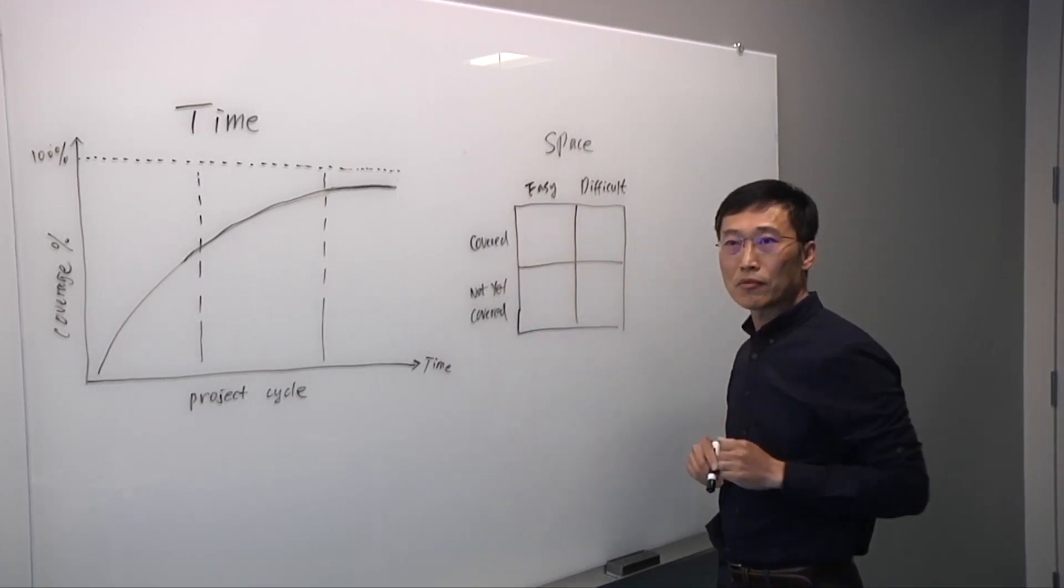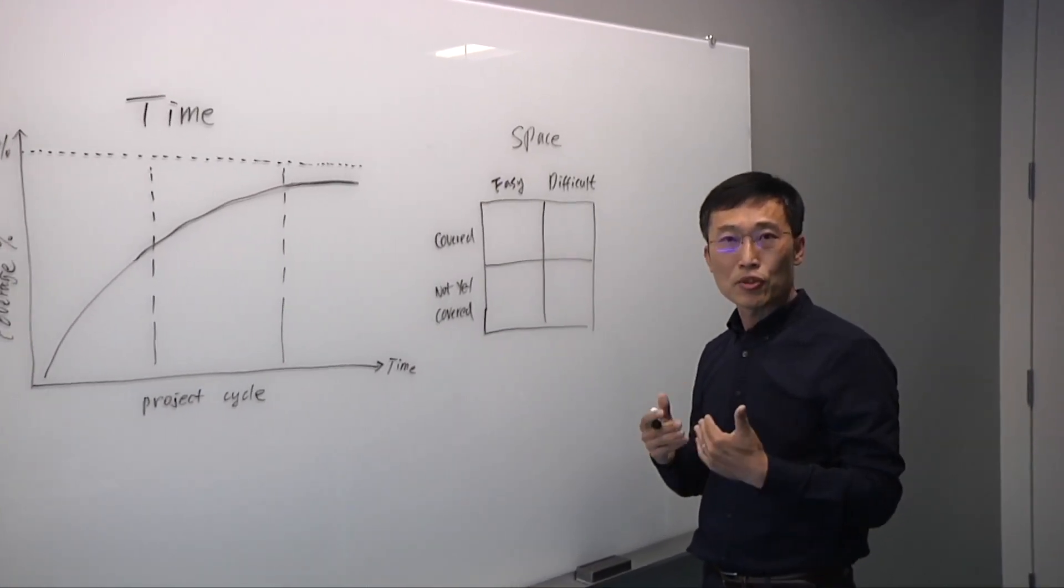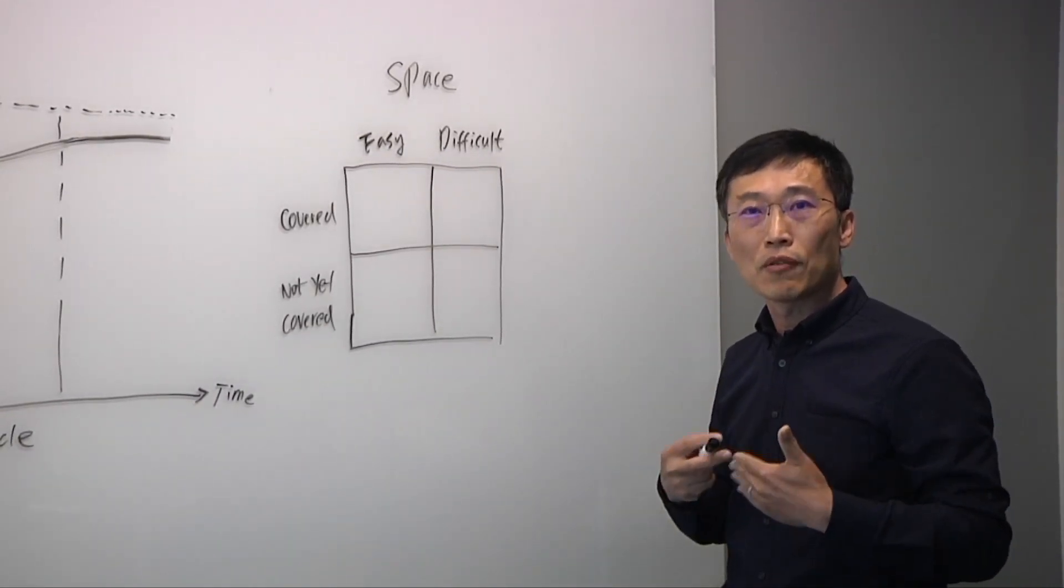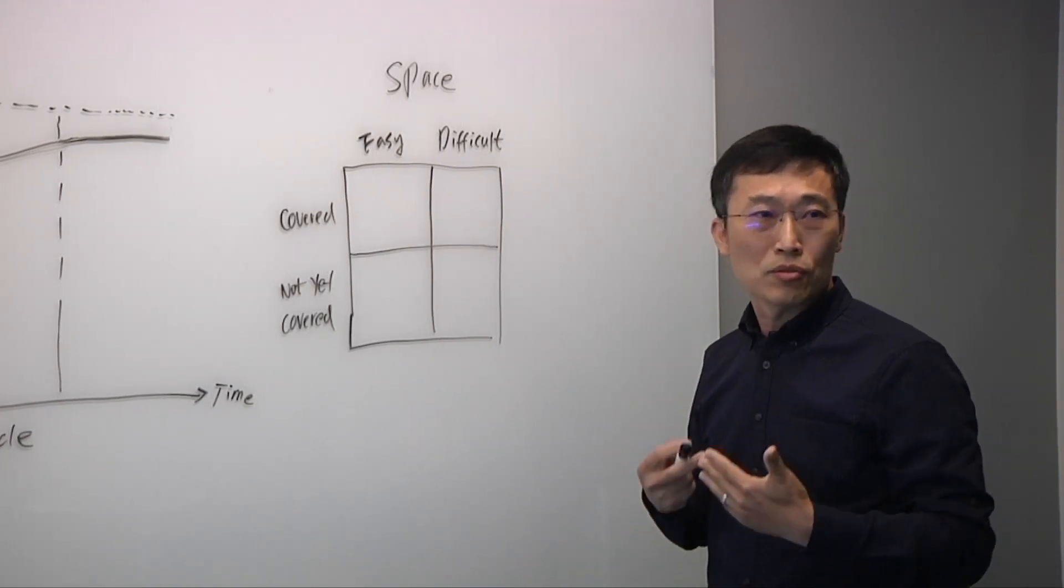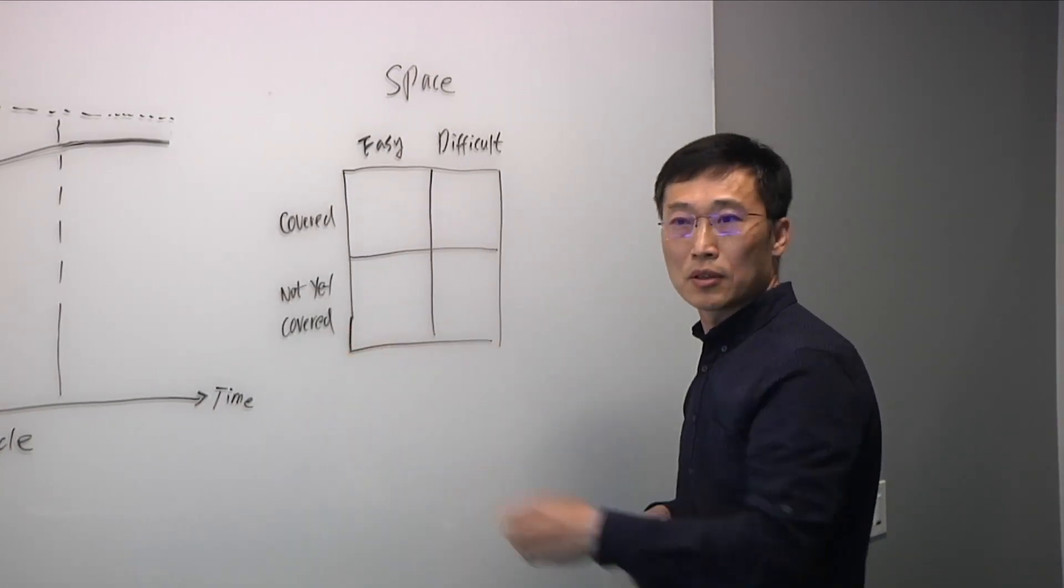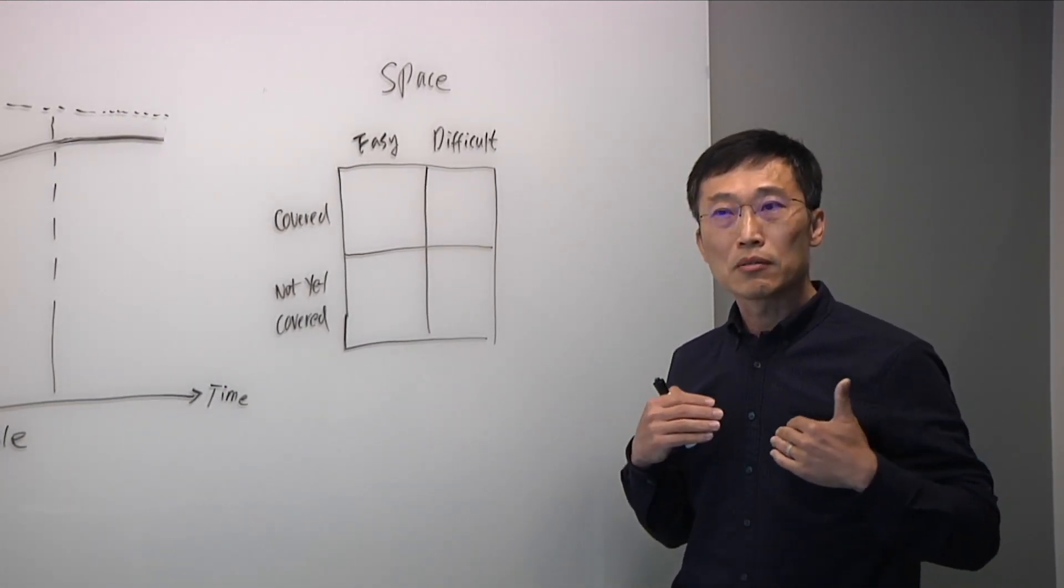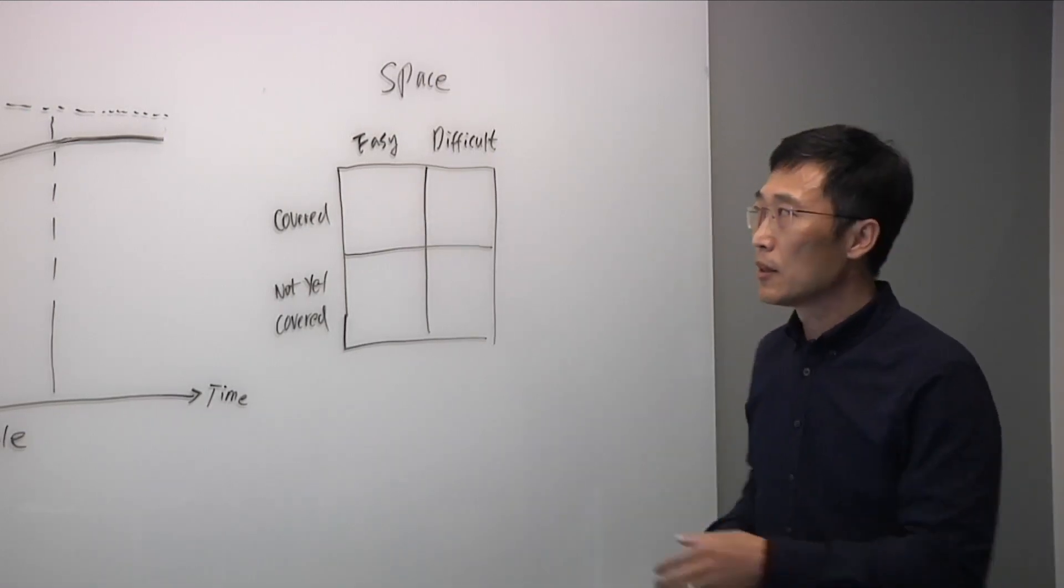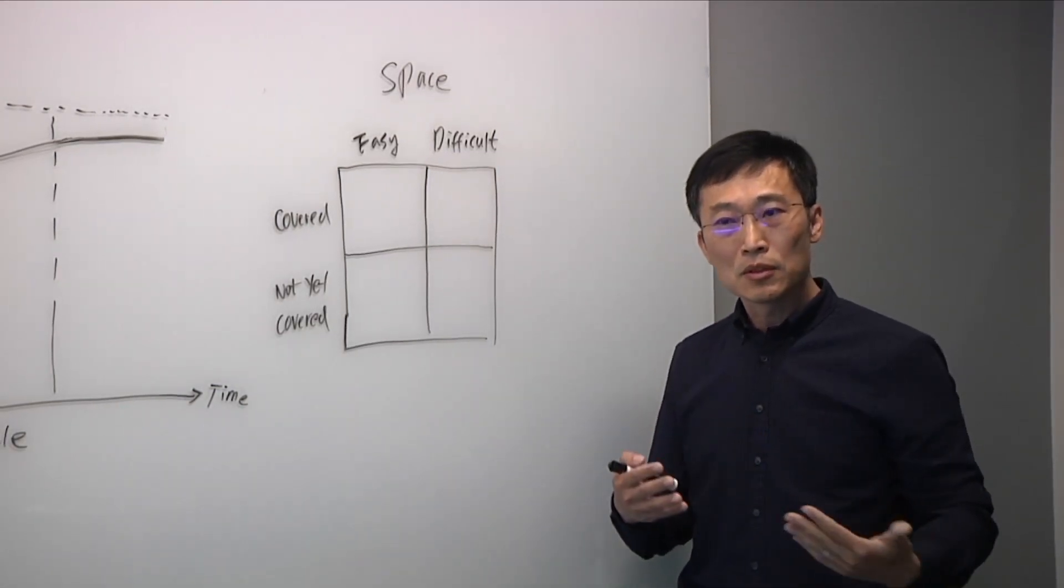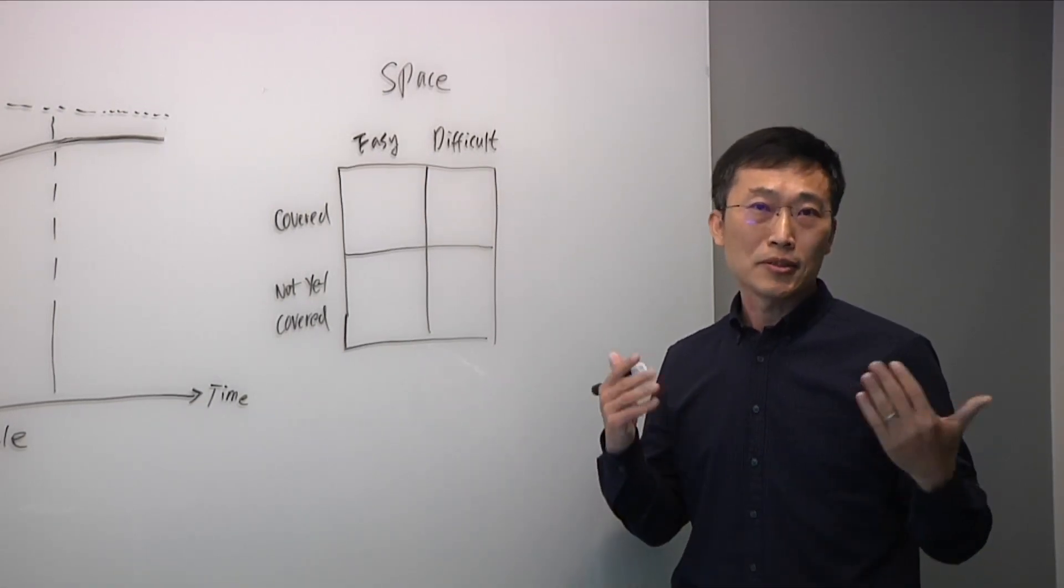For example, if easy and already covered, can we cover them faster and reduce the redundancy of covering the same coverage object again and again? If it's difficult to cover, can we increase the frequency of covering those so-called hard-to-hit, rare-to-hit objects? Looking at this quadrant, it's easy but not yet covered. Can we use some formal or other technology to identify those so-called uncoverable objects so that we don't need to even spend time covering them? Finally, if it's difficult, not yet covered, can AI machine learning provide some mechanism to find out a way to cover them or provide the information to users that they are, in fact, not coverable?